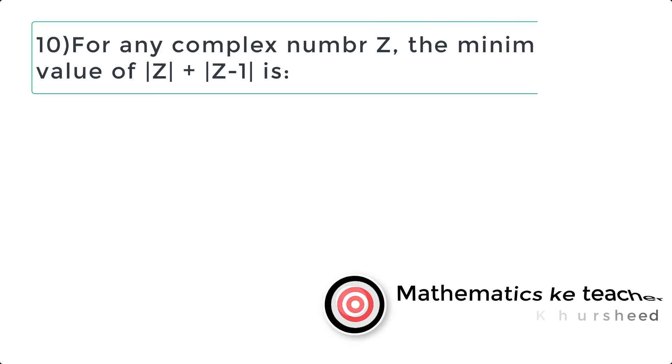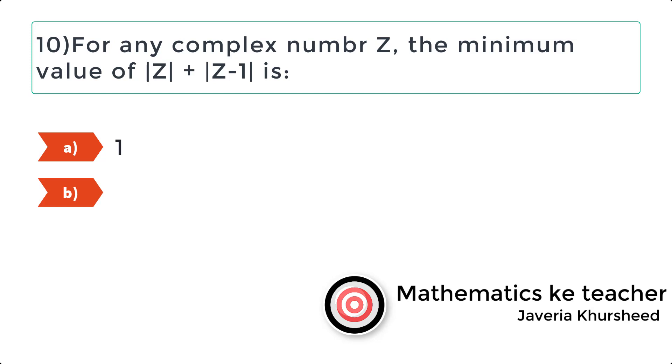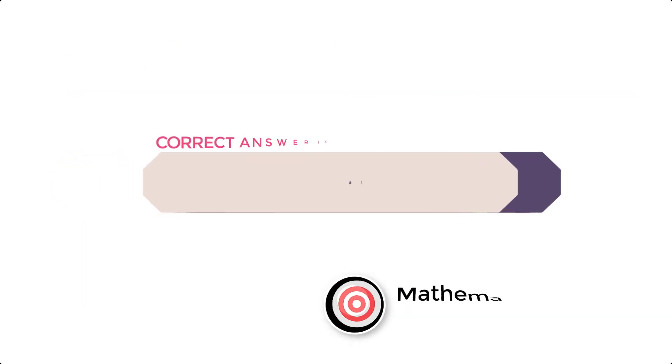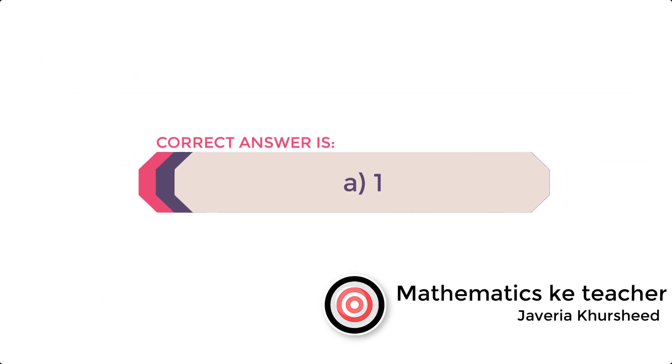Question 10: For any complex number z, the minimum value of mod of z plus mod of z minus 1 is: a) 1, b) 0, c) 1 by 2, d) 3 by 2. Correct answer is a) 1.